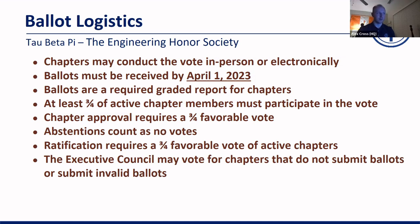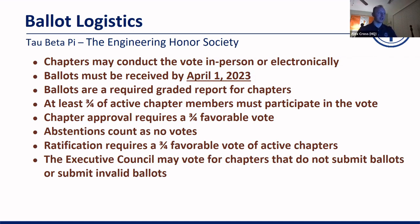This is a graded report for chapters for annual evaluation. Importantly, at least three-fourths of the active chapter members must participate in the vote. We'll discuss some opportunities for how you define active members. Chapter approval requires a three-fourths favorable vote of the voting active members. Importantly, abstentions count as no votes, so keep that in mind when figuring out your tabulation.